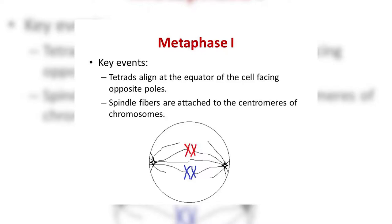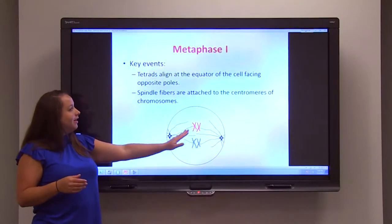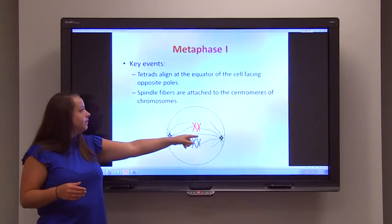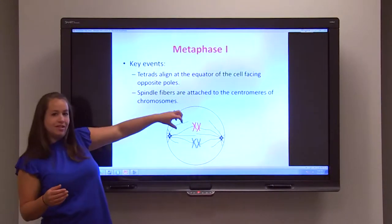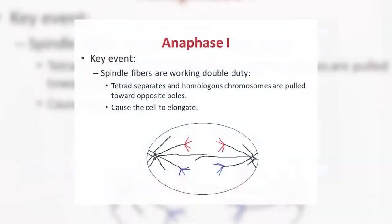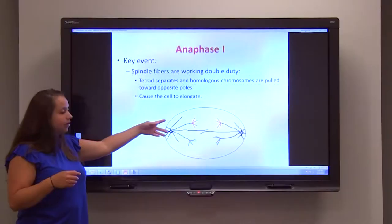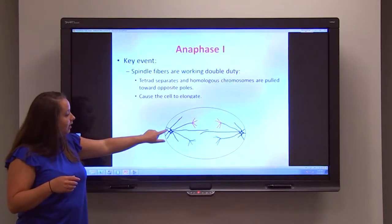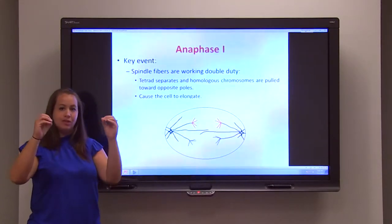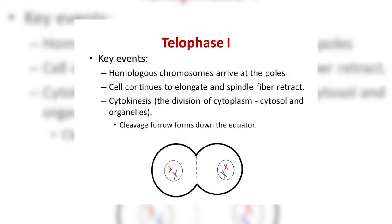During metaphase I, the tetrad aligns at the equator, with one homologous chromosome facing either pole. The spindle fibers attach to the centromere of each homologous chromosome, also attaching at the pole of the cell. Then you enter anaphase I, where the spindle fibers work double duty — shortening to pull the chromosomes apart, but elongating at the poles to help elongate the cell, getting the two distinct poles further apart so you can form two distinct cells.